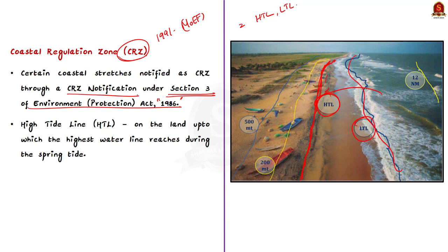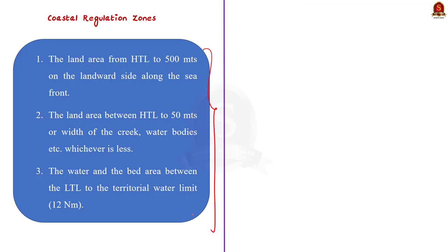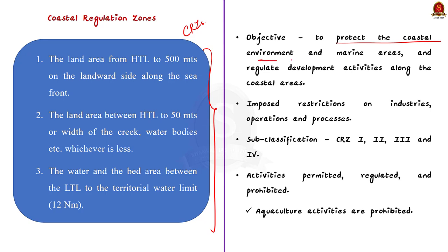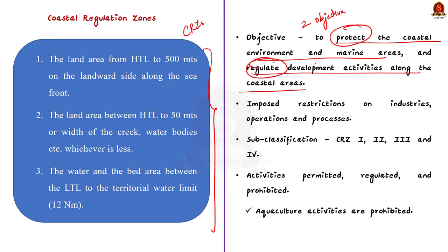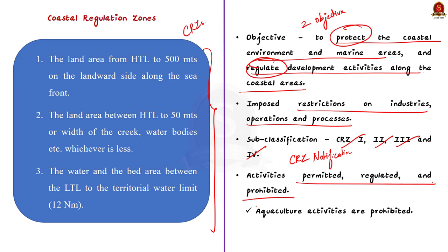A CRZ is declared to protect the coastal environment and marine areas and also to regulate developmental activities along the coastal areas. There are restrictions on industries, operations and processes in the CRZ area. CRZ is further subclassified as CRZ 1, 2, 3 and 4 by the CRZ notifications, and in each sub-zone, only certain activities are permitted while others are prohibited. Aquaculture activities are prohibited in the CRZ by the CRZ notifications.